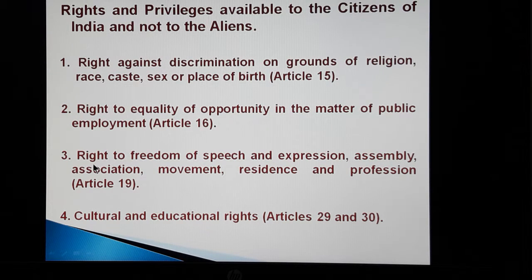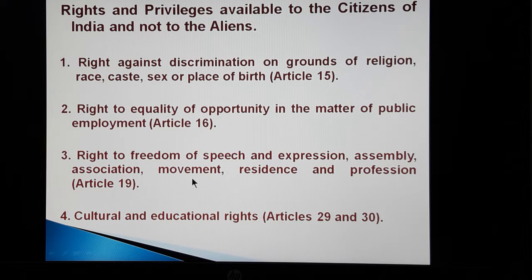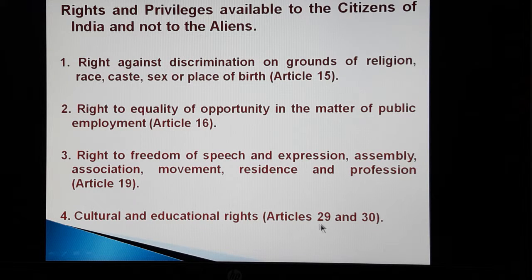The third right is the right of freedom — freedom of speech and expression, assembly, association, movement, residence, and profession. This has been provided under Article 19 of the constitution. These six kinds of freedoms are available to the citizens of India, but not to the aliens. Then comes the fourth right, that is the cultural and educational rights, provided under Articles 29 and 30 of the constitution. All citizens of India get these rights, but they are not available to the aliens.